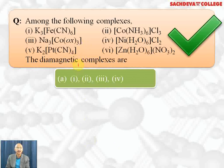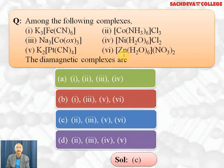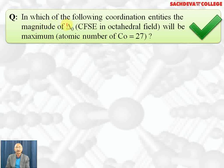Among the following complexes, we need to find the diamagnetic ones. The correct answer is C. Cobalt(III) with 36 electrons has all electrons paired — no unpaired electrons, so it is diamagnetic. Similarly, cobalt with 36 electrons is diamagnetic. Platinum in +2 oxidation state with cyanide (a strong field ligand) has all electrons paired — it is diamagnetic. Zinc(II) has no unpaired electrons and will always form diamagnetic complexes.